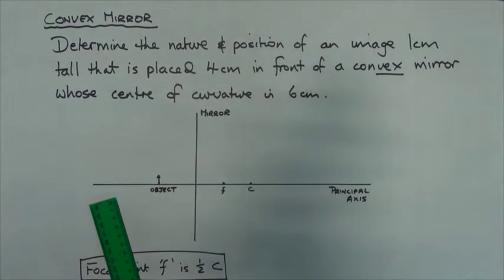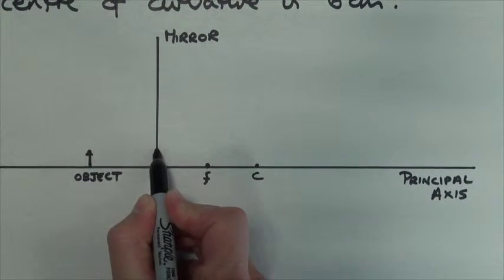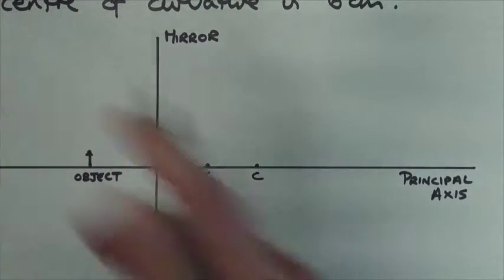So remember the object is in front of the mirror. So let's apply the law. Now the law states that we go, first of all, parallel with the principal axis, and then through the focal point.